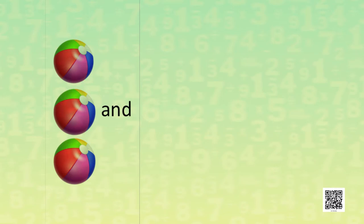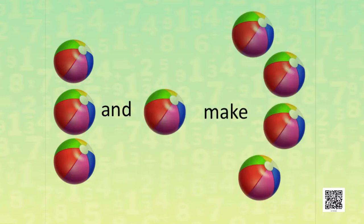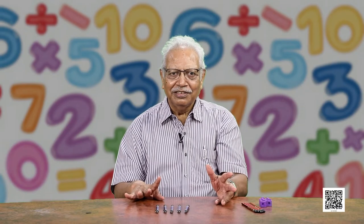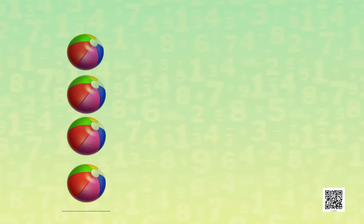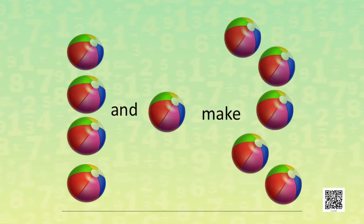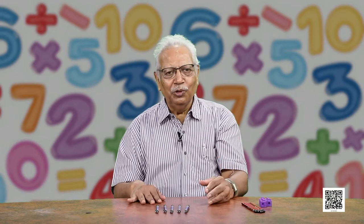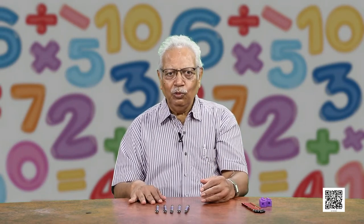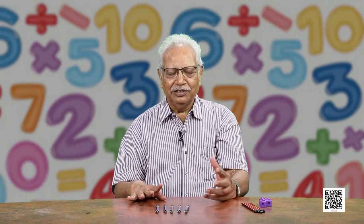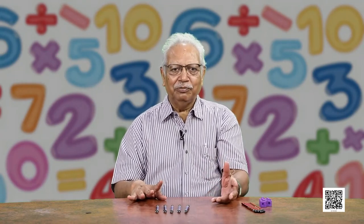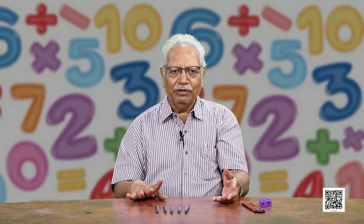Similarly, if we have 3 balls and we add one more ball, it makes 4. And similarly, if we have 4 balls and we add one more ball, then it becomes 5 balls. So, you know that 1 and 1 make 2, 2 and 1 make 3, 3 and 1 make 4, and 4 and 1 makes 5.